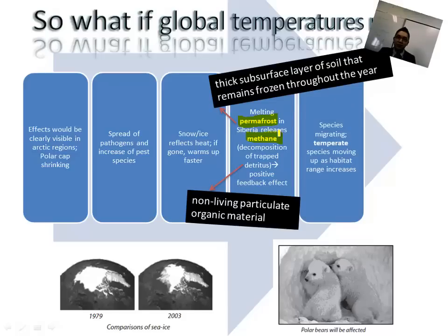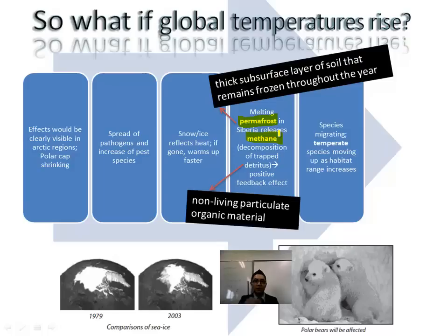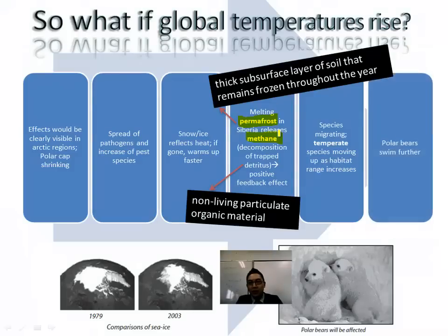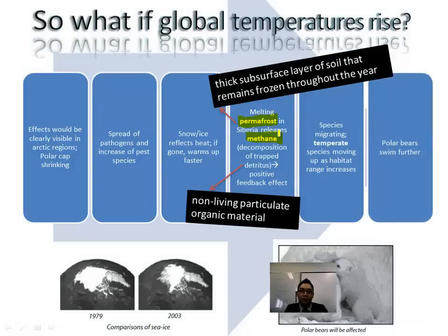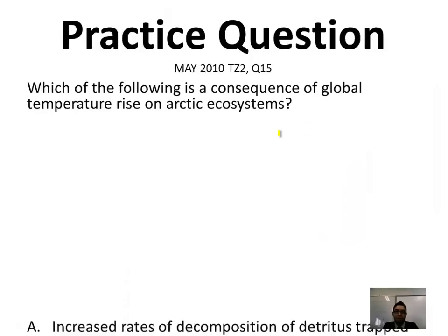Species migrating — we talked about spread of pathogens earlier. Species could also be moving to different habitats. If temperatures get too hot or too cold, that could throw off any ecosystem, which requires a balance of prey, predators, and all abiotic factors. Polar bears have to swim further to find ice. That's a real problem.